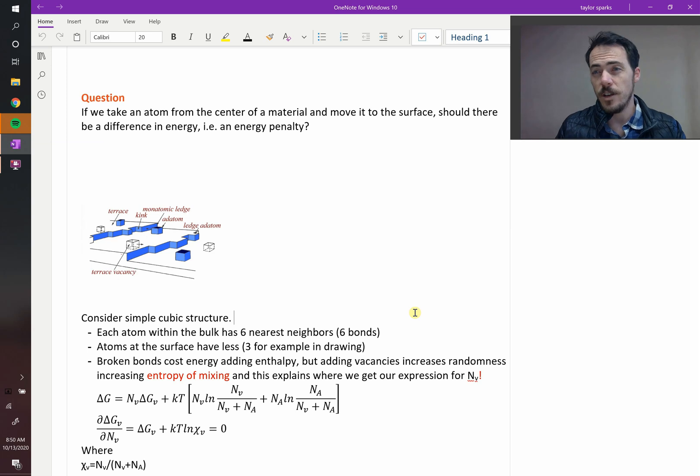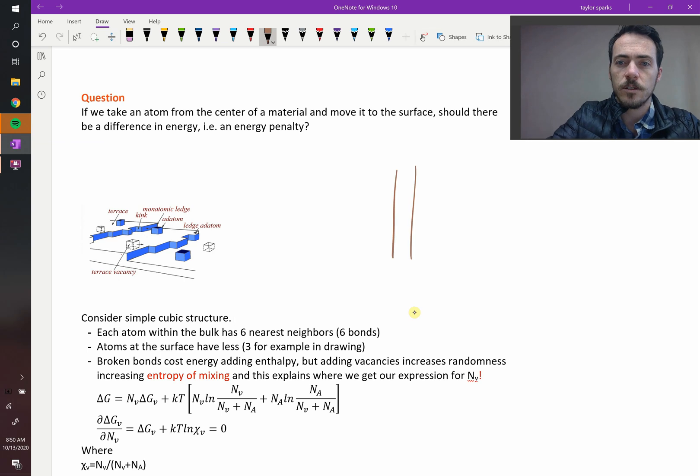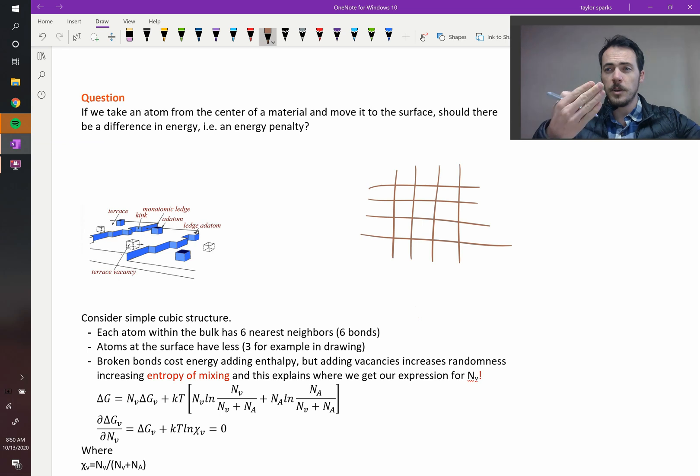So there is an energy penalty. Now, why is an energy penalty? Let's think about it in terms of entropy and enthalpy. We'll do enthalpy first, so bonding. Imagine if it's a simple cubic arrangement. So you've got atoms at the intersections of all these points, plus coming in and out of the page as I've drawn it here.